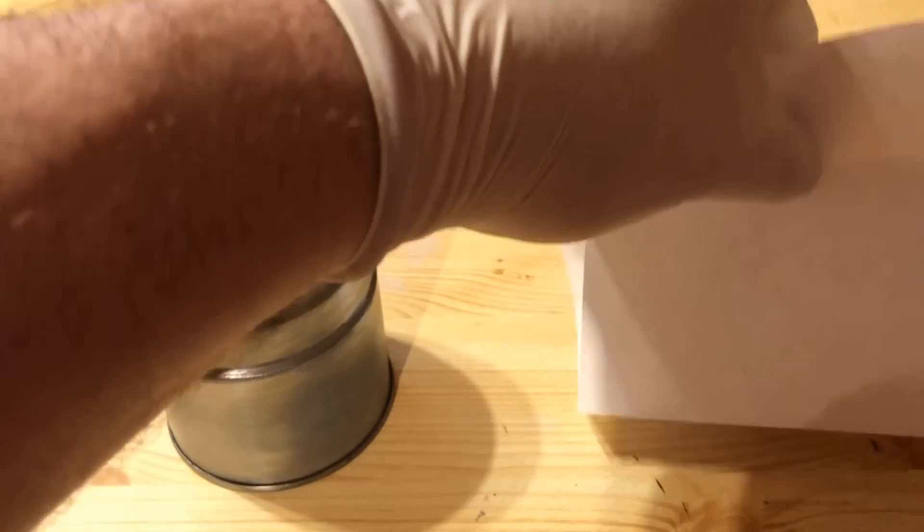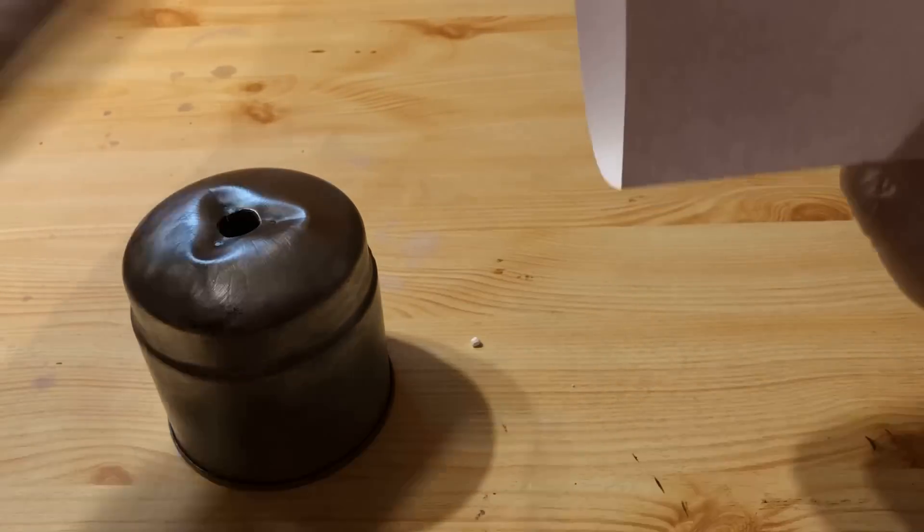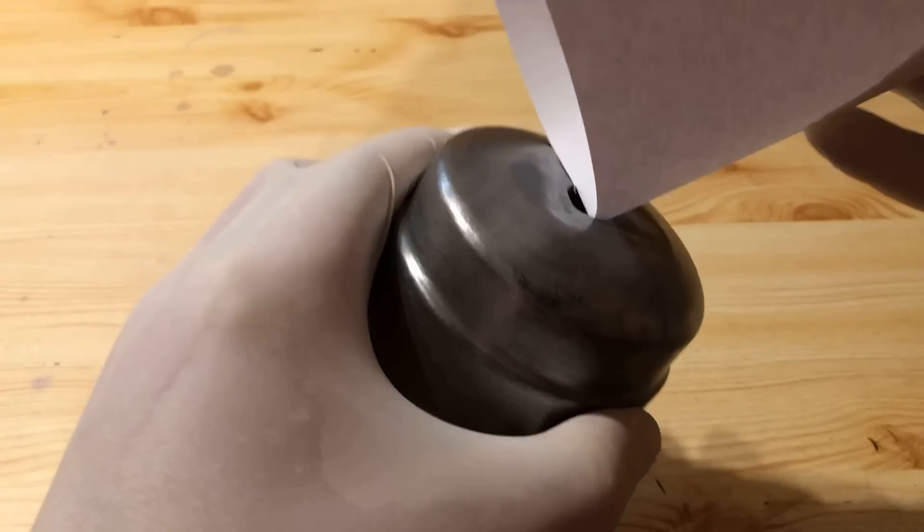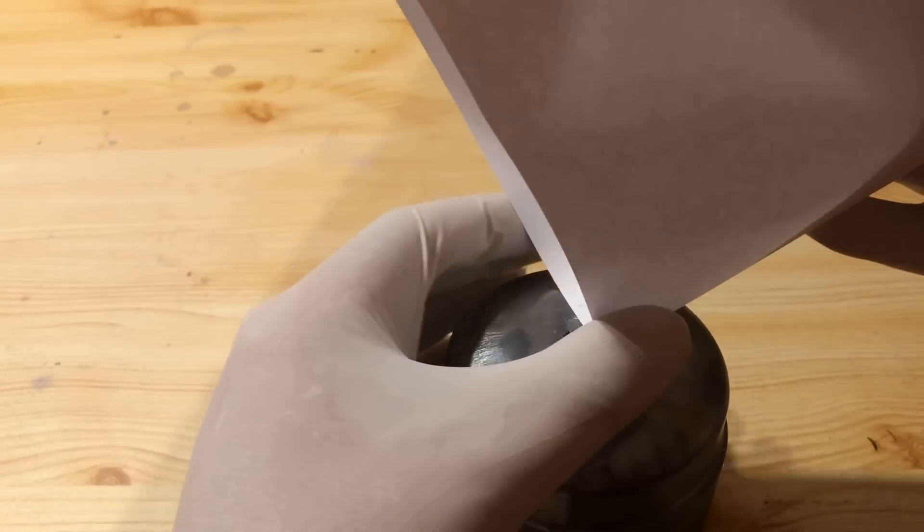The mixture is poured into a suitable tin can. I use an empty gas cartridge for my lab burner, where I have removed the paint.